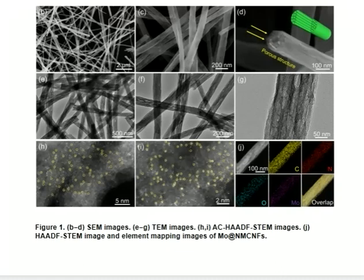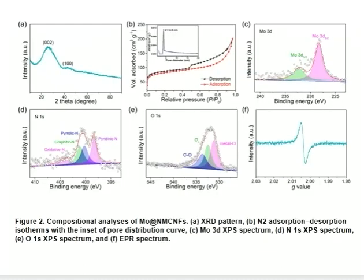The 1D fiber structure is maintained after the pyrolysis and leaching process, manifesting outstanding mechanical robustness. This picture shows a compositional analysis of the Mo catalyst, where panel A is the XRD diffraction pattern.